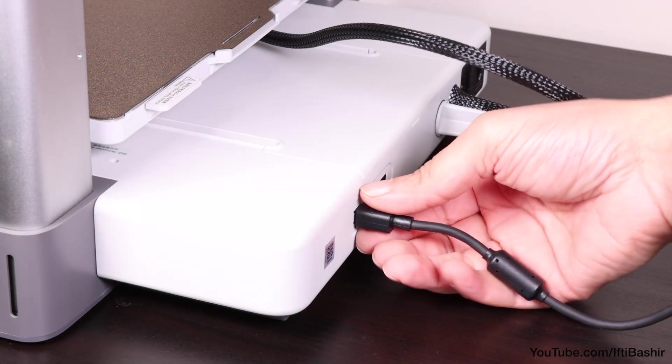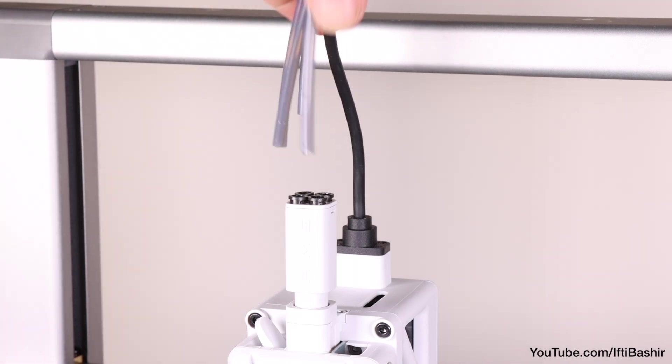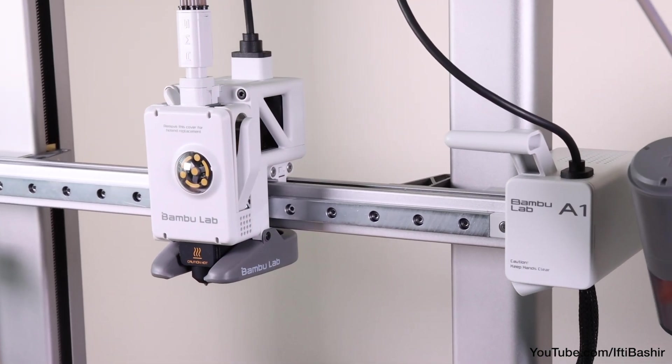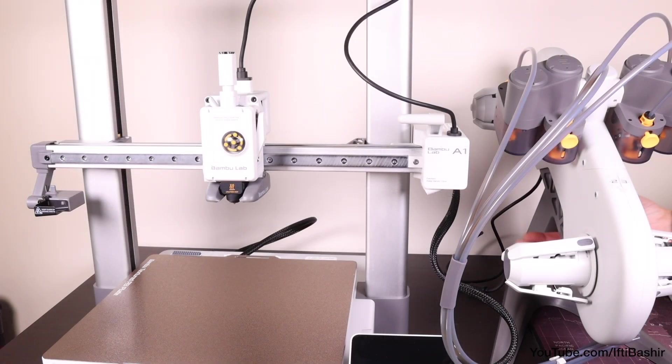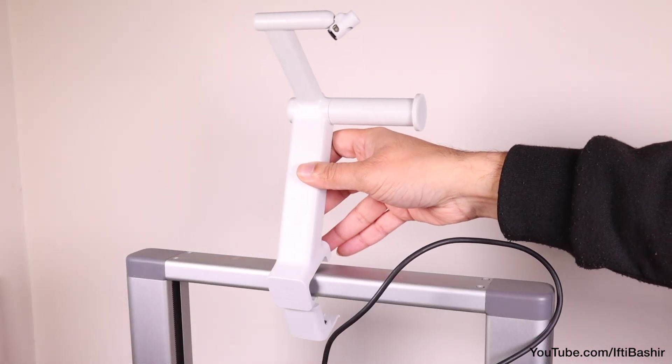I'm actually going to start with just the printer and remove the AMS light unit for the moment. We'll add that back after the main unit is set up. Not something you have to do, but it'll take us through both a single external spool setup as well as the multiple.